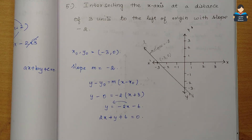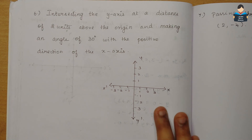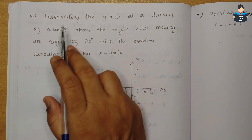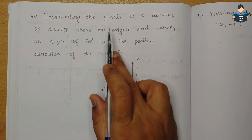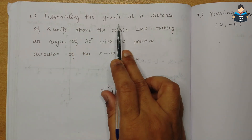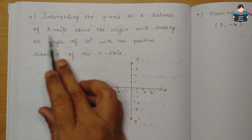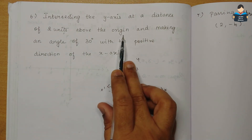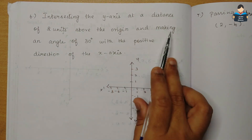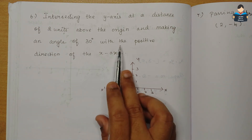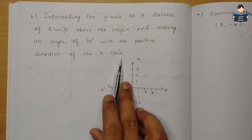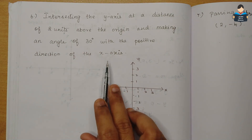Now moving to the next part — a line at a distance of 2 units above the origin and making an angle of 30 degrees with the positive direction of the x-axis.